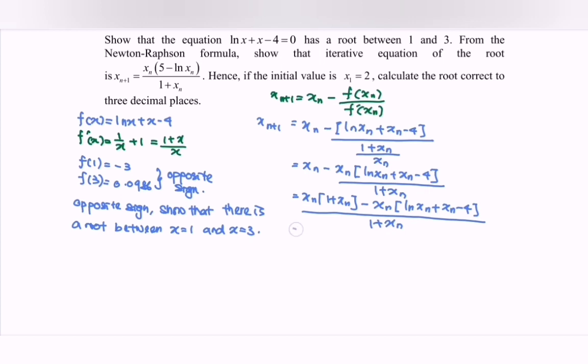Factoring out x_n, we have x_{n+1} = x_n[1 + x_n - ln x_n - x_n + 4]/(1 + x_n).